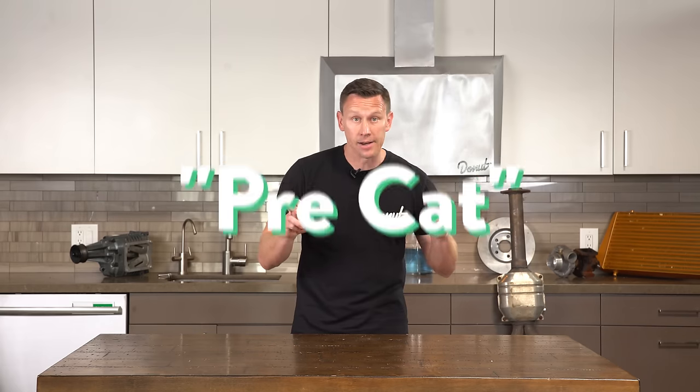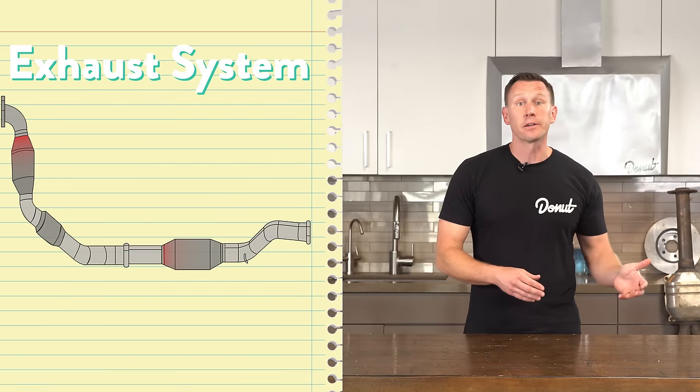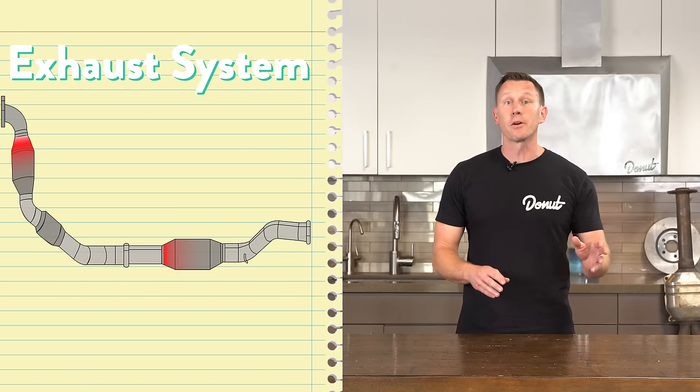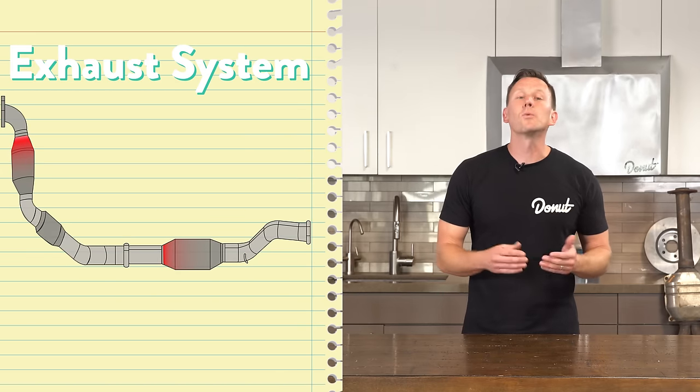Some cars have a pre-cat closer to the engine. It's still a catalytic converter, but because it's so close, it gets hotter quicker and it does a super-duper job at converting. But because it gets hotter, it can wear out faster.